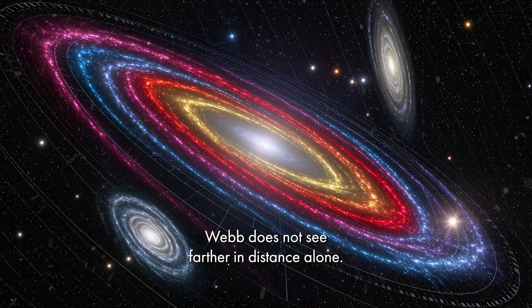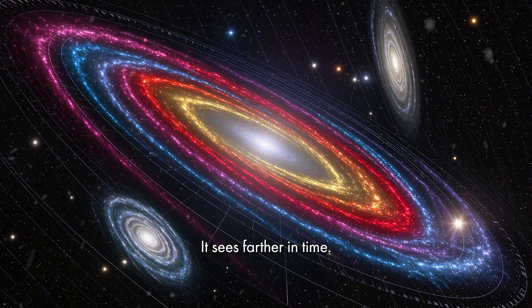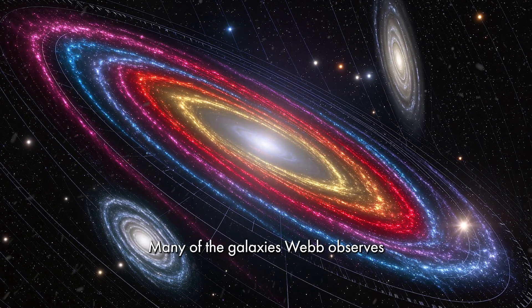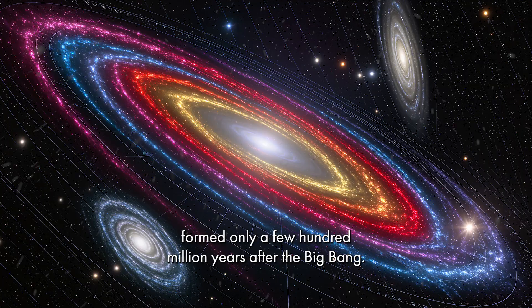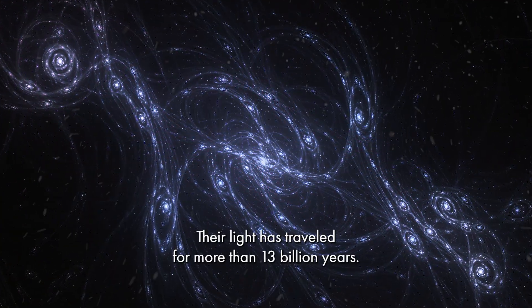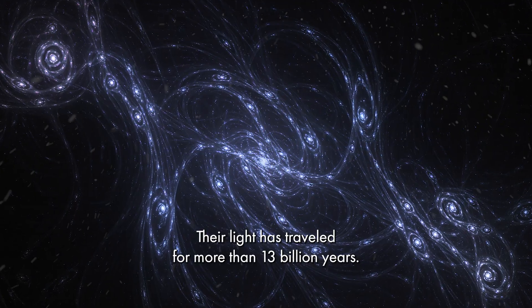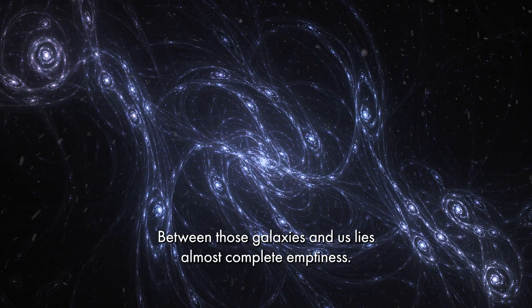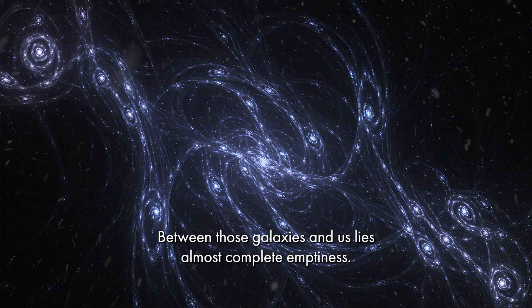Webb does not see farther in distance alone. It sees farther in time. Many of the galaxies Webb observes formed only a few hundred million years after the Big Bang. Their light has traveled for more than 13 billion years. Between those galaxies and us lies almost complete emptiness.